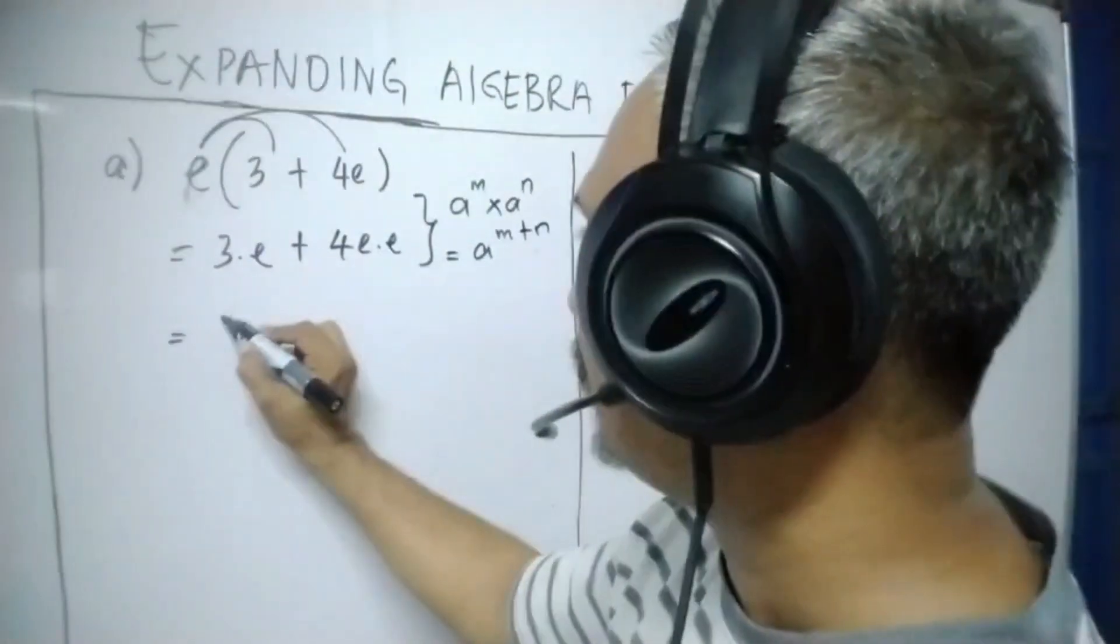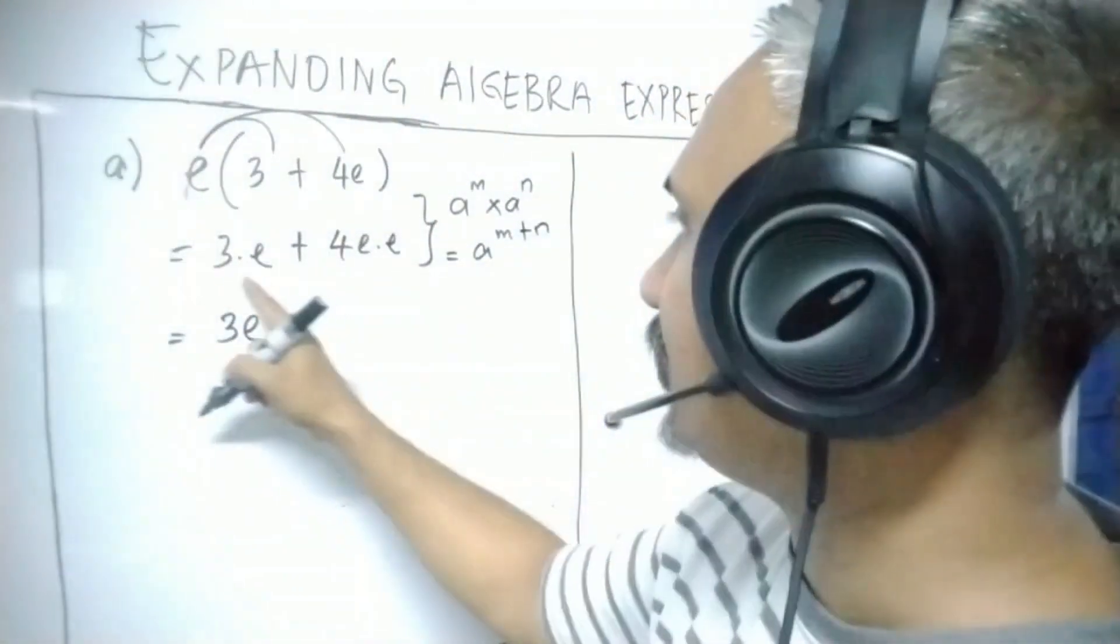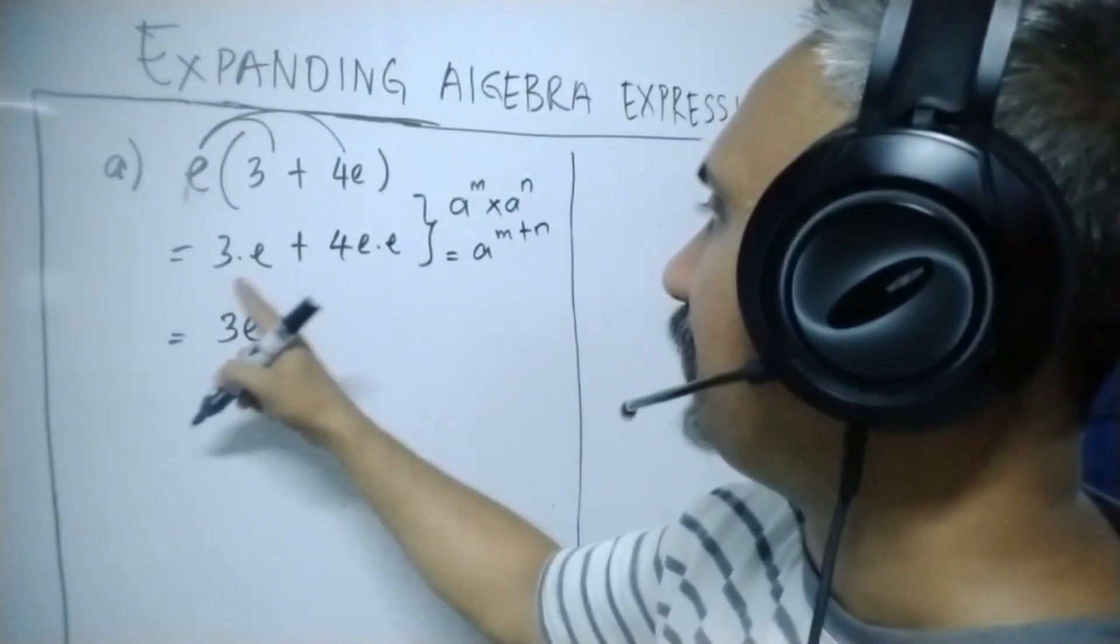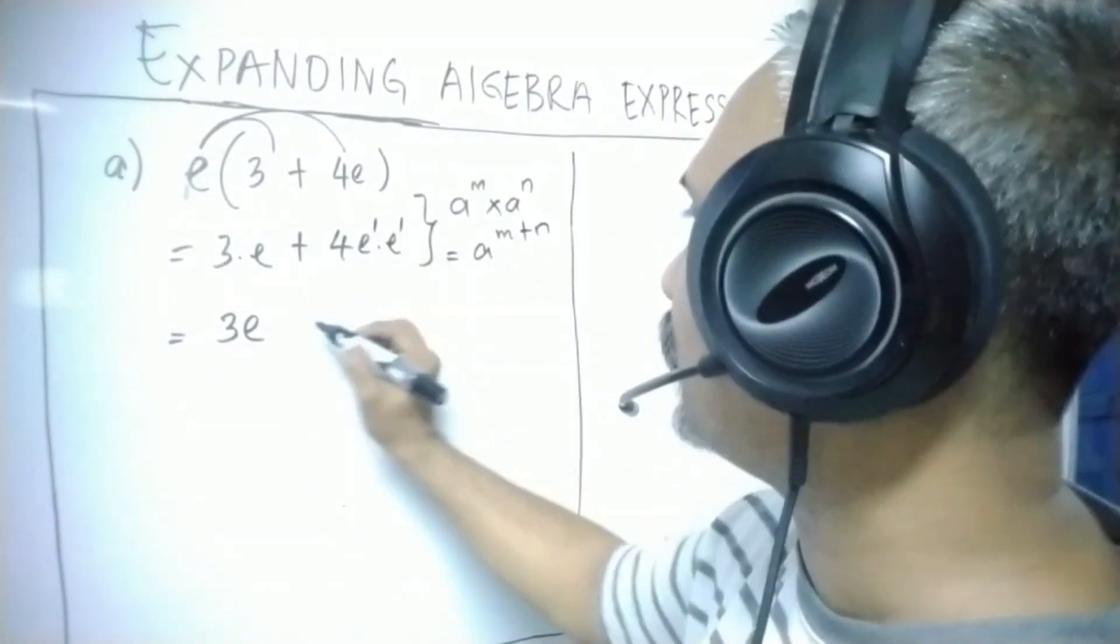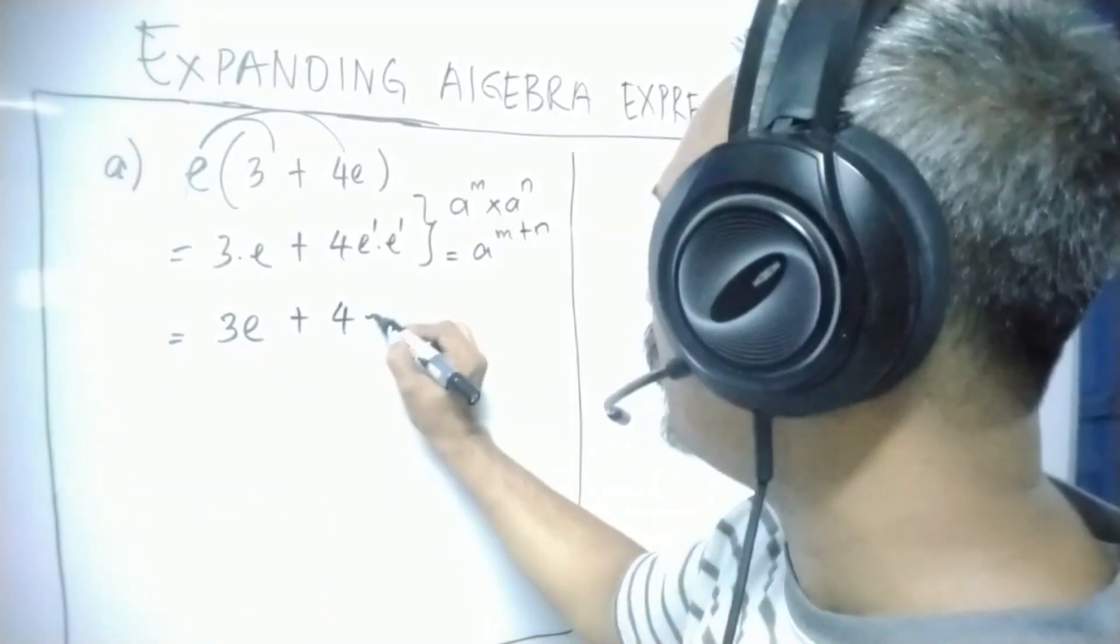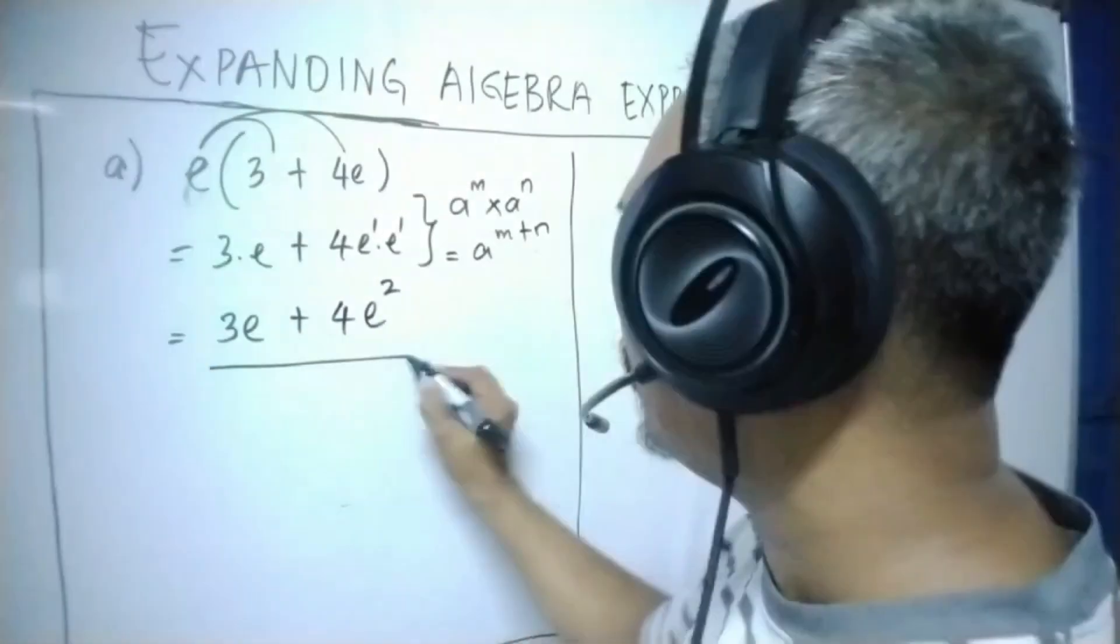So therefore we have here 3E, which is direct multiplication. And here is E power of 1, E power of 1. 1 plus 1 is 4E squared. Answer.